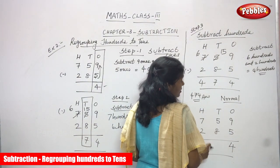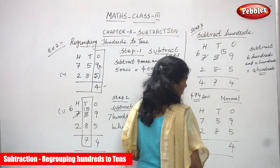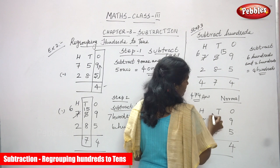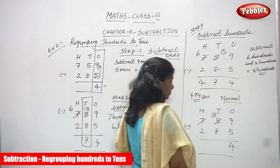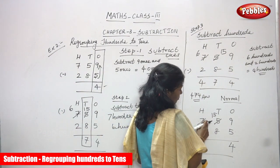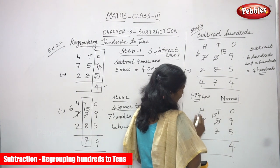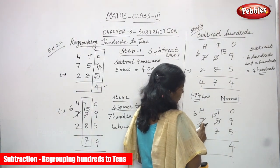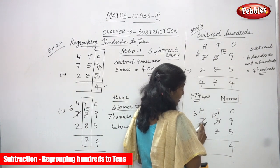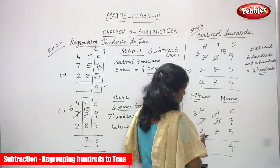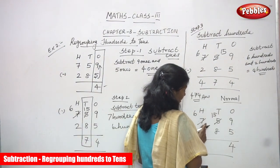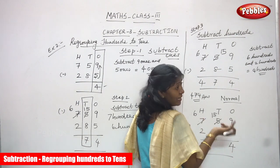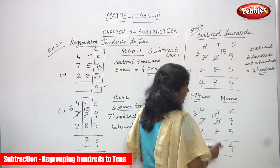In the tens place the numbers are five and eight. Five tens is not enough to subtract, so borrow from the hundreds. One hundred equals ten tens, so five tens becomes fifteen tens. Seven hundred becomes six hundred because we borrowed one hundred from it. Now ten plus five gives fifteen.